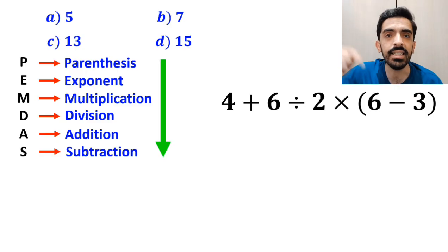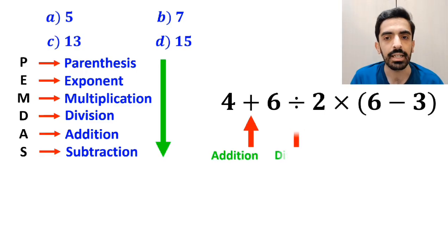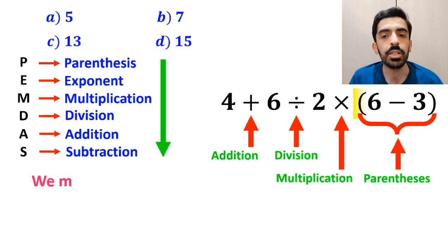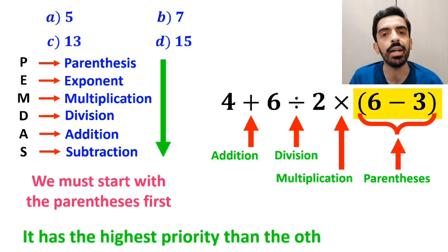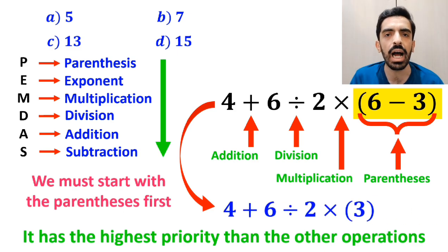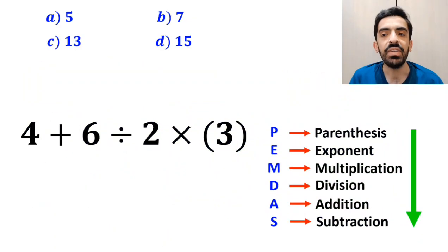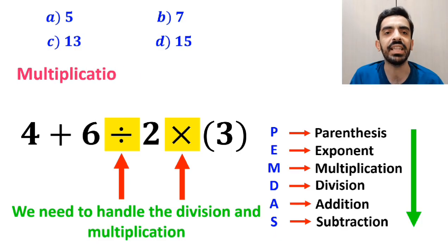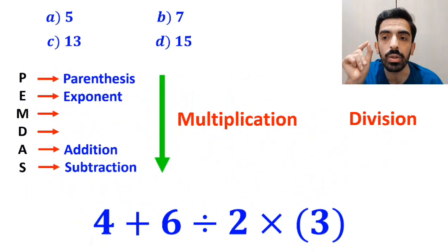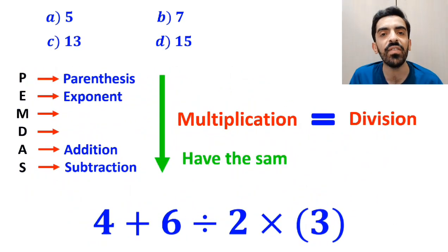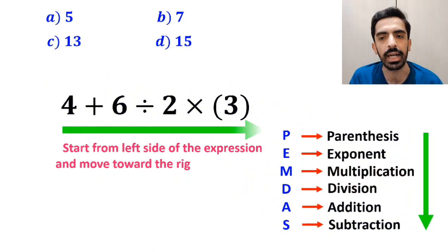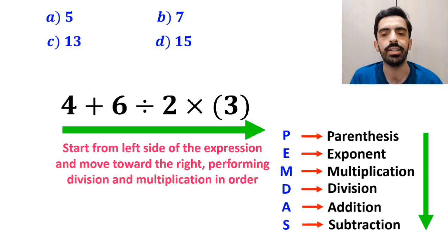As you can see on the screen, in this expression, first we have an addition sign, then a division sign, followed by a multiplication, and finally parenthesis. We must start with the parenthesis first, because it has the highest priority over the other operations. So, instead of this expression, we can write 4 plus 6 divided by 2 times 3. In the next step, we need to handle the division and multiplication, because multiplication and division have a higher priority than addition. However, it's very important to note that in the PEMDAS rule, multiplication and division have the same level of priority. In this case, the best thing to do is to start from the left side of the expression and move toward the right, performing division and multiplication in order.